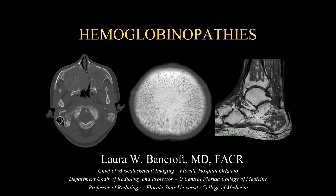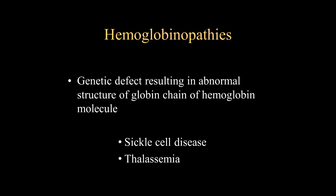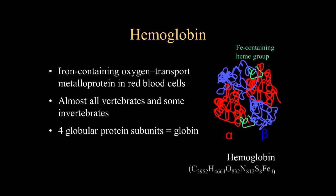I'm Laura Bancroft from Florida Hospital, and I'm going to be talking about hemoglobinopathies. So what are hemoglobinopathies? These are a broad range of genetic defects, but they all result in an abnormal structure of the globin chain of hemoglobin. The two primary diseases we're going to discuss will be sickle cell disease and thalassemia.